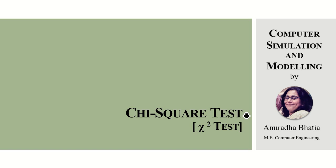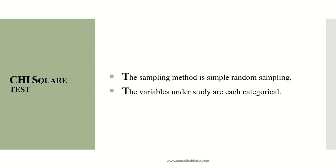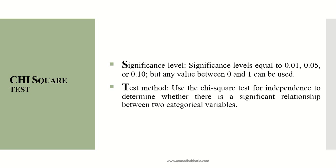Let's see the chi-square test or goodness of fit test for computer simulation and modeling. The sampling method used is simple random sampling, and the variables under study belong to each category.